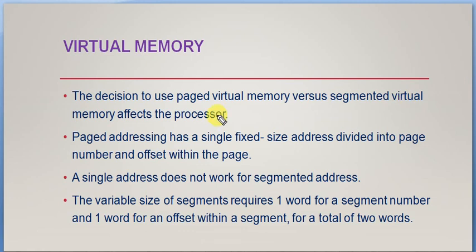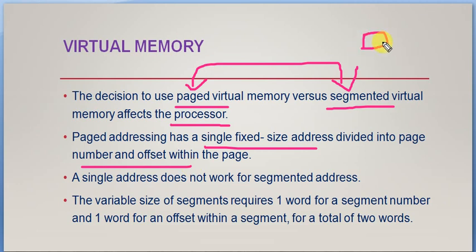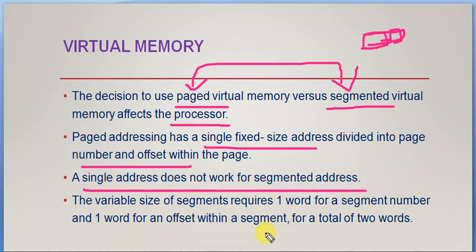The decision to use paged versus segmented virtual memory affects the processor. Paged addressing has a single fixed-size address divided into page number and offset within the page. In paging, the page number and offset are part of the same address itself. A single address does not work for segment addressing — in segmentation, one word is used for the address and a second word is used for the offset within a particular segment, requiring two words for storing the address.